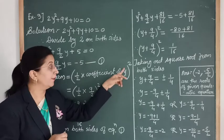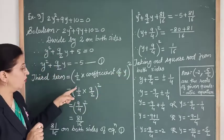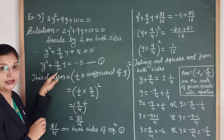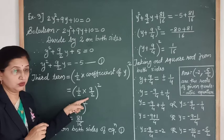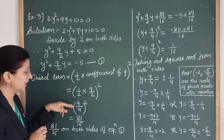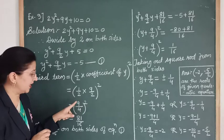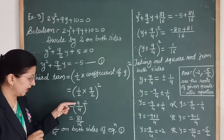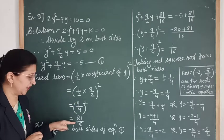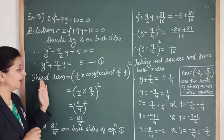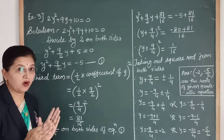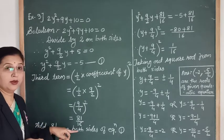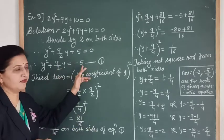Now let's find the third term. The formula is: third term = (½ × coefficient of y)². The coefficient of y is 9/2. So the third term = (½ × 9/2)² = (9/4)². The square of 9 is 81 and the square of 4 is 16. So the third term is 81/16. We add 81/16 to both sides of equation 1. So we get y² + (9/2)y + 81/16 = -5 + 81/16.